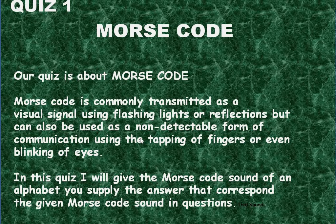Quiz 1. Our quiz is about Morse code. Morse code is commonly transmitted as a visual signal using flashing lights or reflections, but can also be used as a non-detectable form of communication using the tapping of fingers or even blinking of eyes. In this quiz, I will give the Morse code sound of an alphabet. You supply the answer that corresponds to the given Morse code sound in questions, and I will repeat it three times.